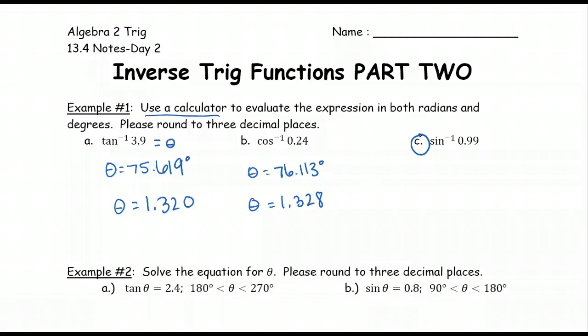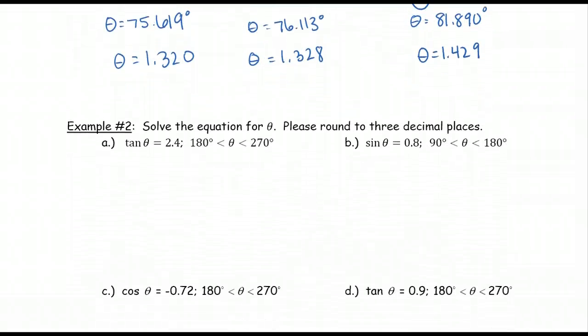On your own I would like you to do letter C. Pause here and do it on your own. I hope you paused and did those calculations. If you didn't, make sure you try it on your own. 81.890 degrees and 1.429 radians. It's extremely important that you write your degree symbol so we know that that is actually in degrees.